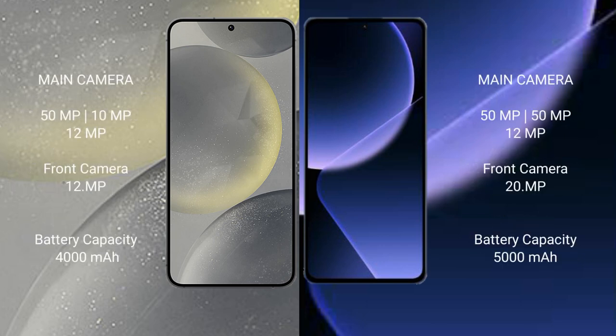Samsung Galaxy S24 also has a triple camera setup: 50MP plus 10MP plus 12MP, with a 12MP front camera. Xiaomi 13T Pro features a triple camera setup: 50MP plus 50MP plus 12MP, with a 20MP front camera.